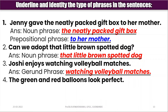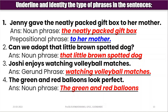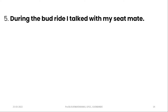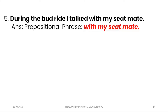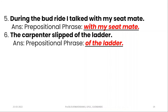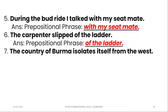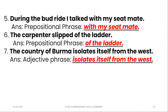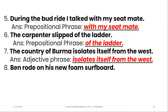Fourth: 'The green and red balloons look perfect' — 'the green and red balloons' is the noun phrase. Fifth: 'During the bus ride, I talk with my seatmate' — 'with my seatmate' is the prepositional phrase. Sixth: 'The carpenter slipped off the ladder' — 'off the ladder' is the prepositional phrase. Seventh: 'The country of Burma isolates itself from the west' — 'isolates itself from the west' is the adjective phrase.